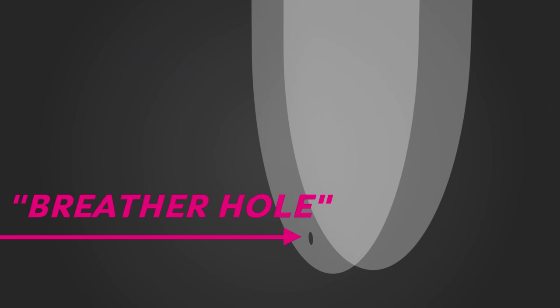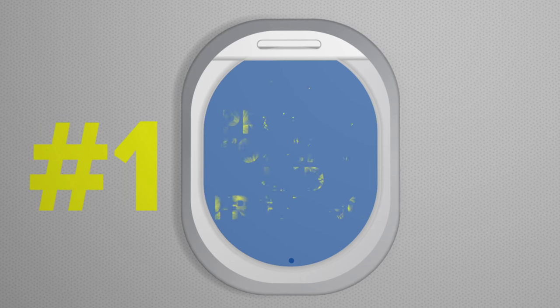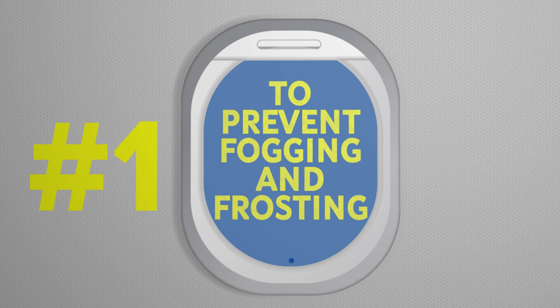The middle pane has that hole. It's sometimes called the breather hole. There are two purposes for the hole. One, the hole lets warm air in between the two panes, keeping the outer window from getting frosted or fogged up from the really cold air outside.